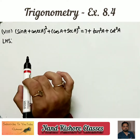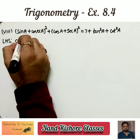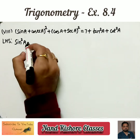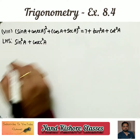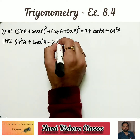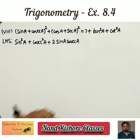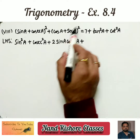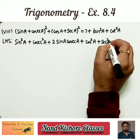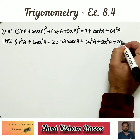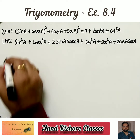There are whole squares, so first I am going to open the brackets using the formula (a plus b)² equals a² plus b² plus 2ab. Applying this formula to both brackets, we get a² plus b² plus 2ab for each bracket.